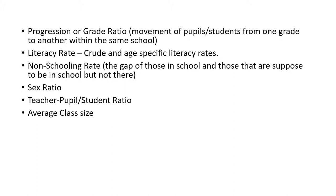We also have the average class size, which is determined by dividing the total number of students by the total number of classrooms available. There is a benchmark — for primary schools, the target is 35 to 40 students per class. However, some schools don't have enough classrooms, and you may find up to 100 students in one classroom. That is not ideal. Knowing the class average helps determine whether you need to build more classrooms to enhance quality education.